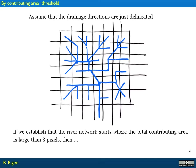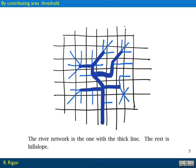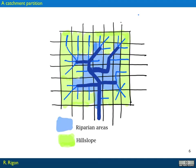Assume we have delineated all the drainage directions in a certain DEM — there is an error in this figure and you have to try to find it. Any point is drained and we have all the drainage directions. One idea is that the river network exists where we have more contributing area, more than for instance three pixels. In that case the river network is the one assigned with a blue thick line, and the other part is just hill slope.